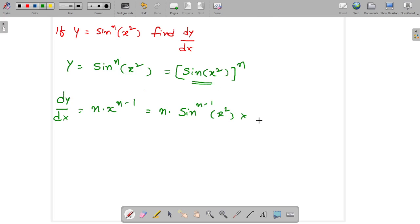Sin x squared differentiation is cos x squared. X squared differentiation is 2 into x to the power of 2 minus 1.